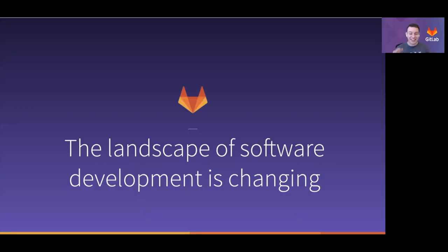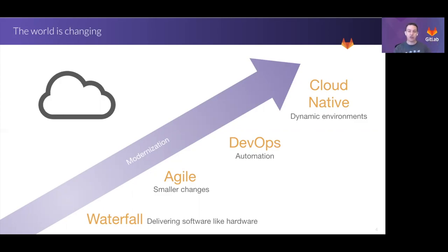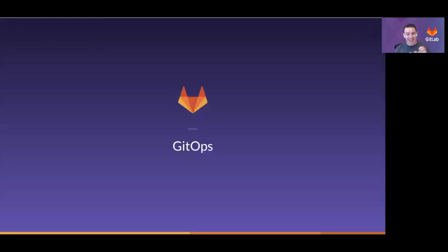The landscape of software development is changing. When we look back on how software development has evolved, we can remember the days of waterfall development. Maybe some of us in large enterprises are even still doing some of this, where we're delivering software like it's hardware, and it causes a lot of challenges. Innovations like Agile and DevOps have allowed us to move a lot faster while also being a lot safer, deploying with less risk more frequently, being able to easily roll back changes. The latest evolution in cloud native applications is about dynamic environments — those that scale up and down automatically based on load, where things can shift and change. Different users logged into the same application can have a completely different experience based on the region or what they've interacted with. In order to manage all of this complexity, we need an infrastructure automation practice that's able to keep up with all of it. And that's where GitOps comes in.